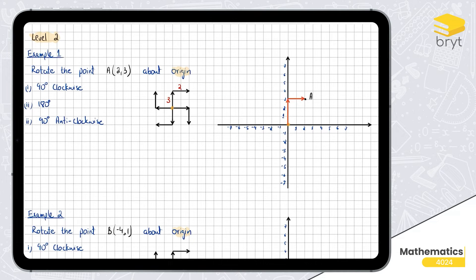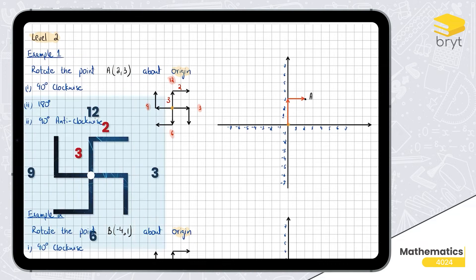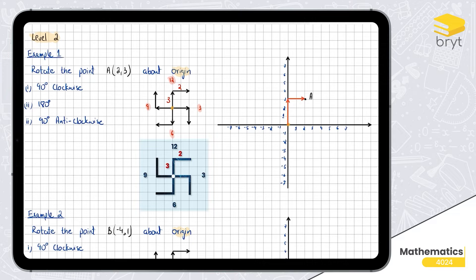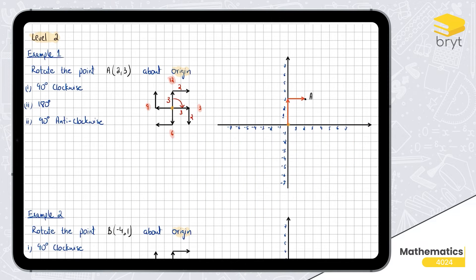Rotating this 90 degrees clockwise — think of a clock face — basically means this spins 90 degrees clockwise. So three units up becomes three units to the right, and two units right becomes two units down. From the center, I move three units to the right and two units down. We end up here — let's call this A prime — and the coordinates are (3, -2).